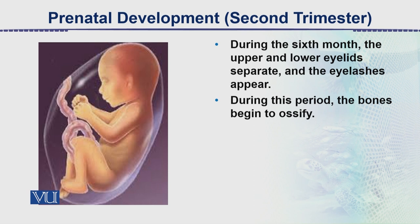In the first trimester, the structure is cartilaginous, but after that ossification begins. During this second trimester period, bone formation starts, but the bones are not yet strong — they are still quite flexible. Ossification continues through this stage.